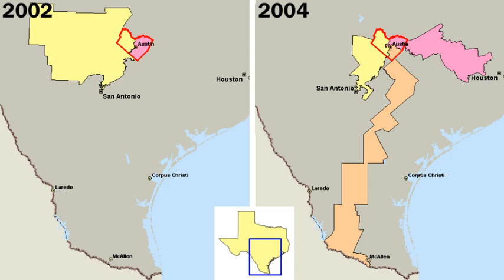State governments have the power to make laws that are not granted to the federal government or denied to the states in the U.S. Constitution for all citizens. These include education, family law, contract law, and most crimes. Unlike the federal government, which only has those powers granted to it in the Constitution, a state government has inherent powers allowing it to act unless limited by a provision of the state or national constitution.